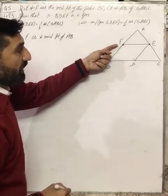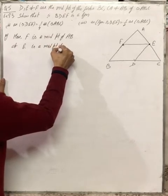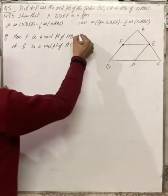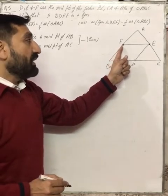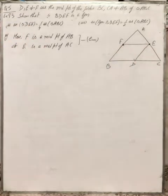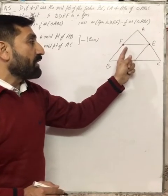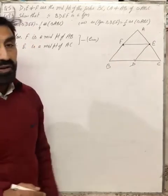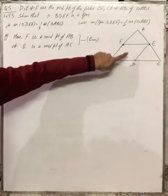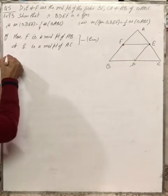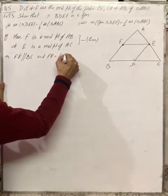F is a midpoint of AB and E is a midpoint of AC. The midpoint theorem states that the line segment joining the midpoints of two sides is parallel to the third side and is half of it. So FE is parallel to BC and FE is equal to half of BC. Let's write it: FE is parallel to BC and FE is equal to half of BC.